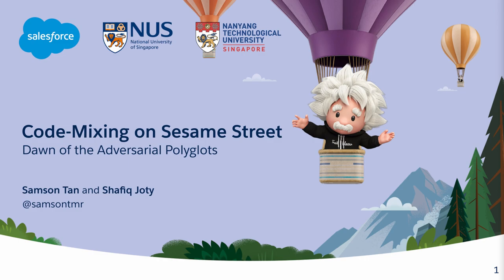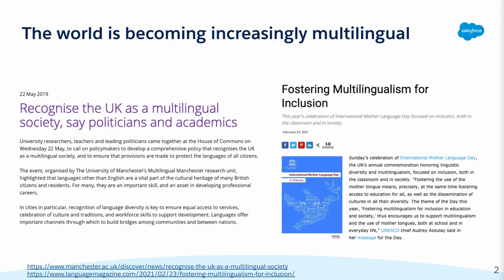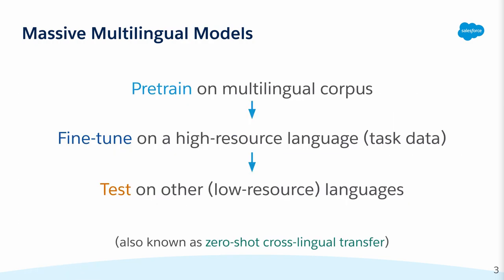Hi everyone, I'm Samson and welcome to my talk on multilingual adversary attacks inspired by code mixing. We live in an increasingly multilingual world, which means that many of us speak multiple languages with varying degrees of fluency. Recent work in multilingual NLP proposes to apply the pre-training fine-tuning paradigm to train a single universal model by first pre-training on a multilingual corpus before fine-tuning it on task data from a high resource language, and then testing on low resource languages not seen during fine-tuning. This is known as zero-shot cross-lingual transfer.